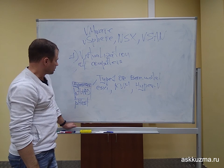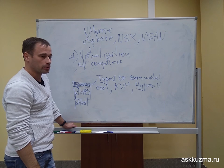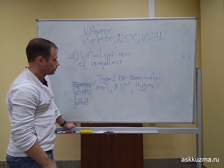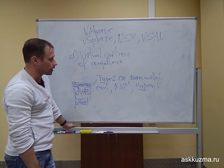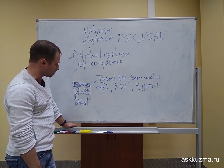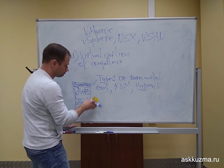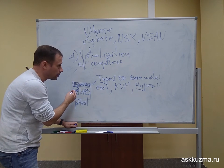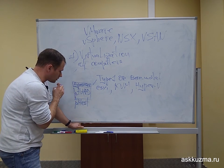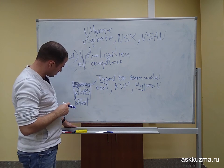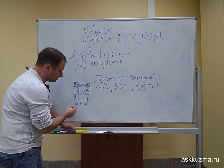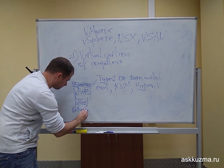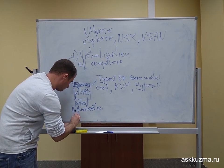We are not talking about type 2 hypervisors that work on top of a physical operating system, like Oracle VirtualBox or VMware Workstation. Only type 1 compute hypervisors are relevant here. The moment you install a bare-metal compute hypervisor, the physical host becomes a virtualization host — a location for virtual machines.